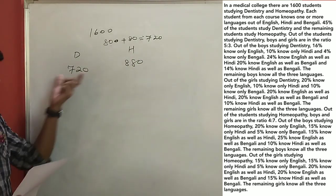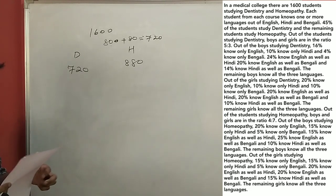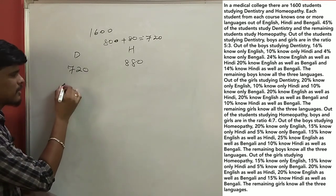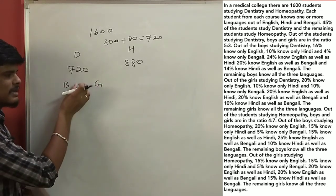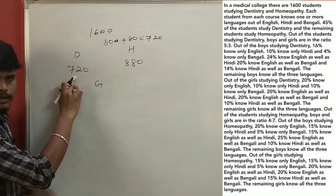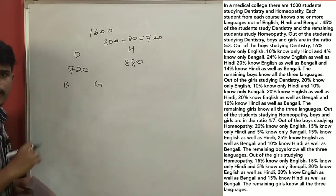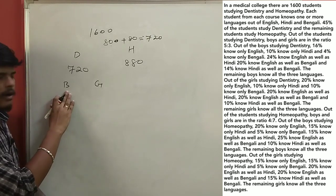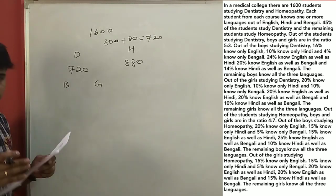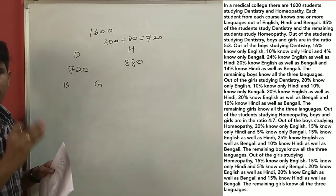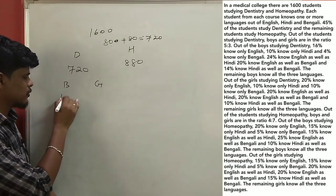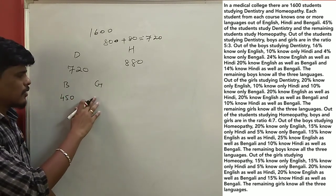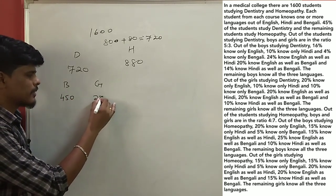Next question: boys-girls ratio is 5 to 3. Overall we have boys and girls. If we split this 5 to 3, 1 part is 90. Boys are 5 parts: 5 × 90 = 450. Girls are 3 parts: 3 × 90 = 270. If you look at homeopathy, boys and girls are in the ratio 4 to 7.